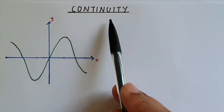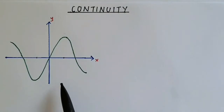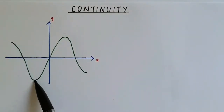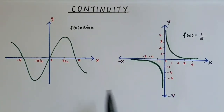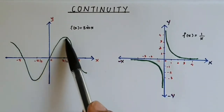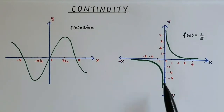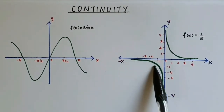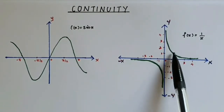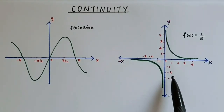Continuity. In a simple way, we can define a function as continuous when its graph is a single unbroken curve — that is, we can draw the graph without lifting the pen from the paper. Looking at two graphs: the first can be drawn without lifting the pen, so it is a continuous function. But for the second curve, I have to lift my pen, so these types of functions are called discontinuous functions.